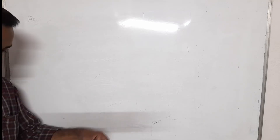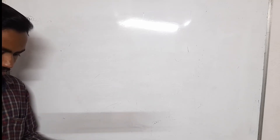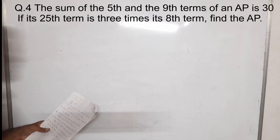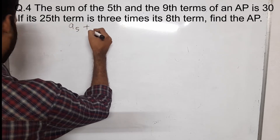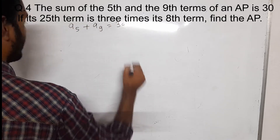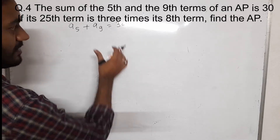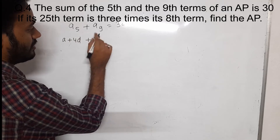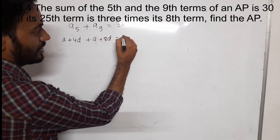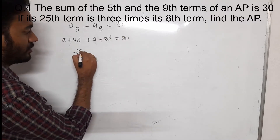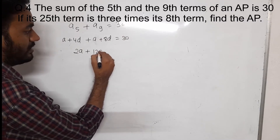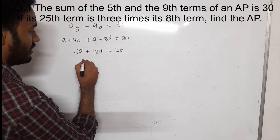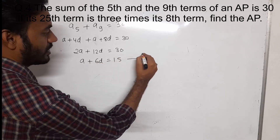Now we move to our fourth question: the sum of the 5th and the 9th term of an AP is 30. Here A5 plus A9 equals 30. Taking the first condition: (A plus 4D) plus (A plus 8D) equals 30. Here 2A plus 12D equals 30. Dividing all by 2, we get A plus 6D equals 15 — that is equation number 1.